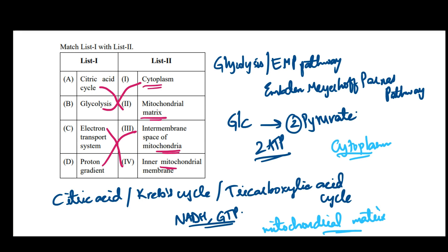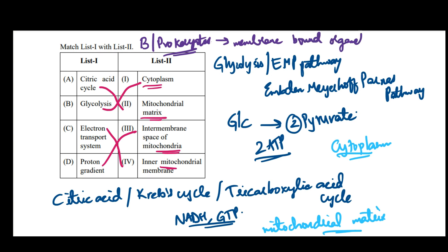One important thing to remember: in the case of bacteria or prokaryotes, where there is no development of a nucleus — meaning no membrane-bound organelles — we know that mitochondria is a membrane-bound organelle with two membranes. So in prokaryotes, they do not have any membrane-bound organelles.